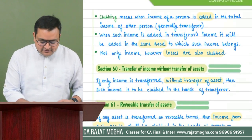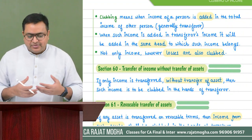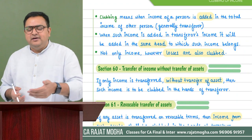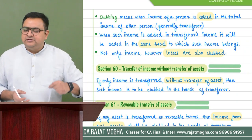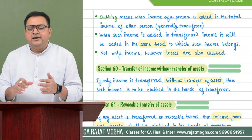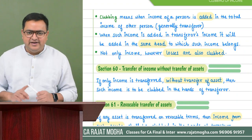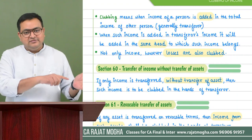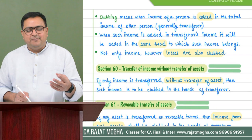First, what does clubbing mean? People don't want to pay taxes, so they try to divert their income to someone else to reduce their tax burden. Income tax came out with provisions that whenever income is diverted, clubbing provisions will be attracted, and the income will be clubbed in the hands of the transferor.